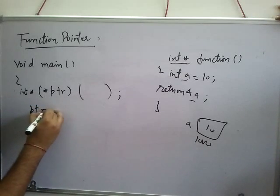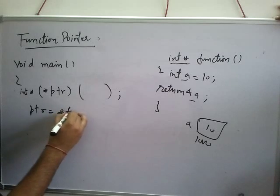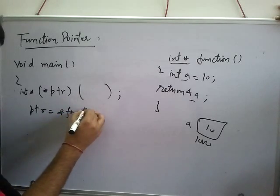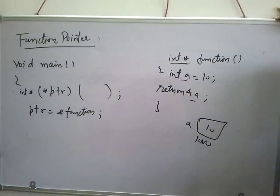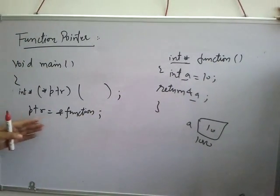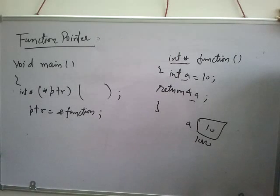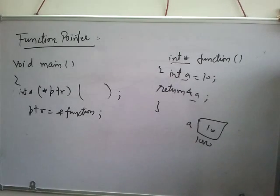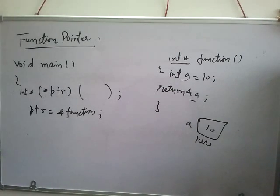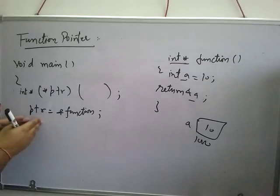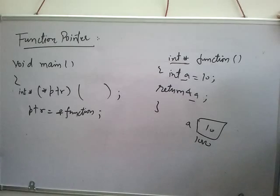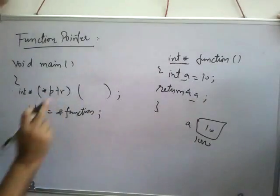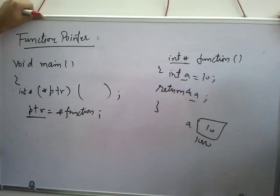Next statement: we want to store this function's address. This function's name is function. We want to store it in ptr, so I'll do it like this. After that, I want to call this function using this pointer. This function is stored somewhere in memory. So how can I do this?